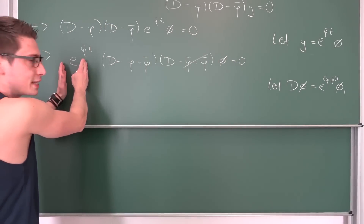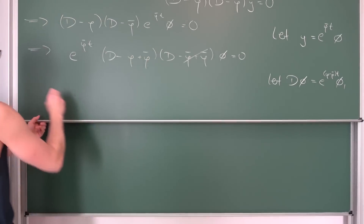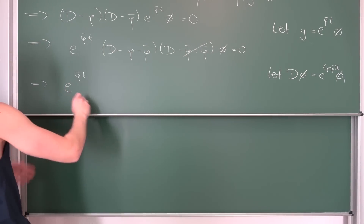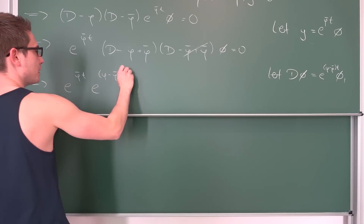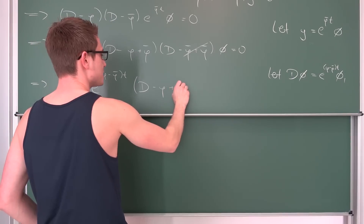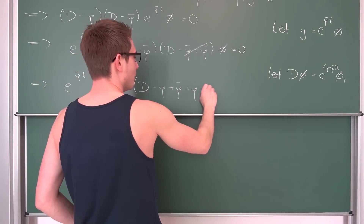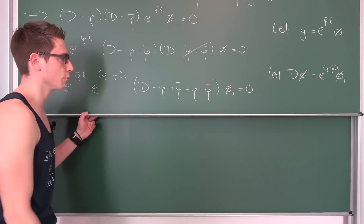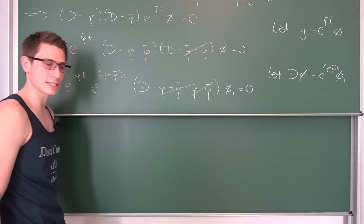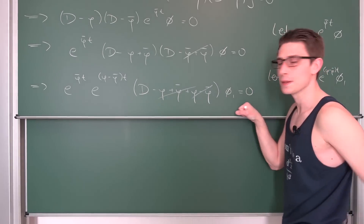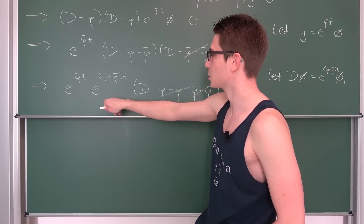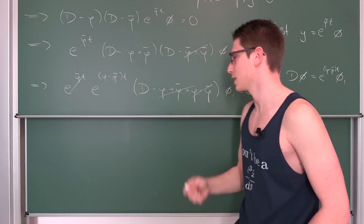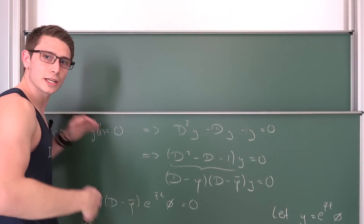After using the shift theorem and plugging in the new substitution, we get e^(φ̄t) · e^((φ−φ̄)t) · (D minus φ + φ̄ + φ − φ̄) applied to φ₁ equals 0. As you might notice, here comes the magic again — all of this cancels out. What we have in here is simply D applied to φ₁. Also, by using the exponential function, the exponents φ̄t and (φ−φ̄)t combine and simplify. Writing everything out, we can now resubstitute and we are basically done.